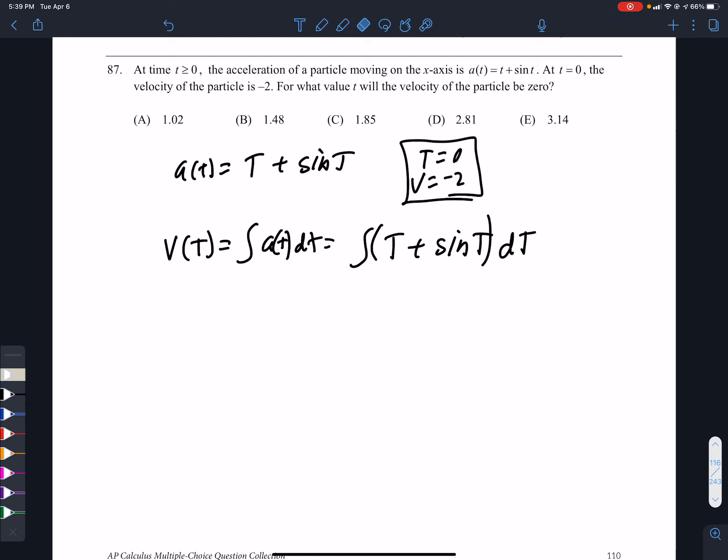1997 number 87. So we look at this problem. We're given the acceleration, so I just copied the acceleration. And they say when t equals 0, velocity is negative 2. So I just wrote that down.